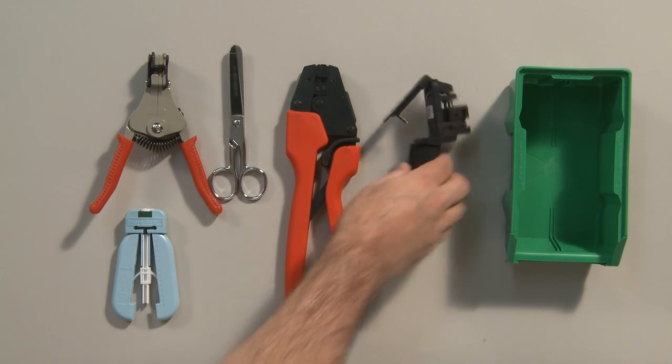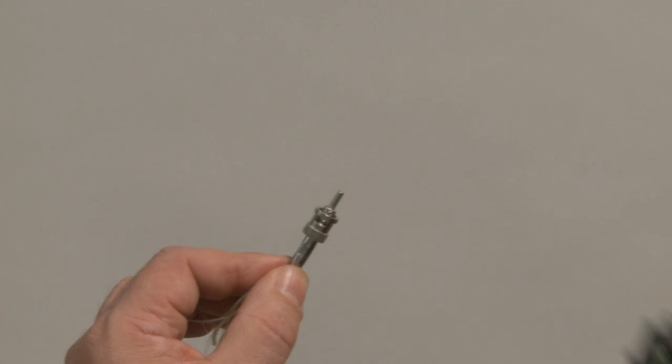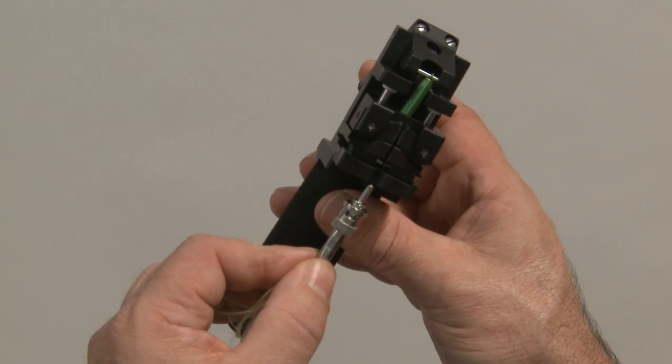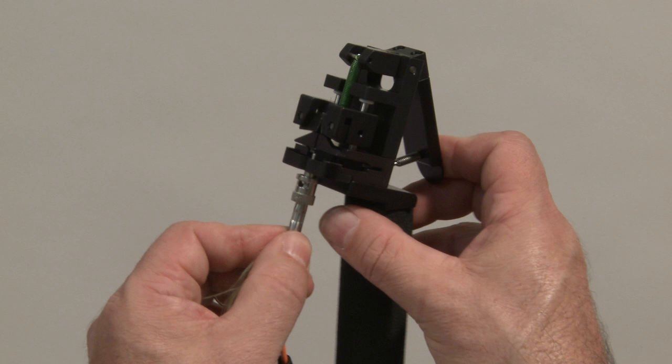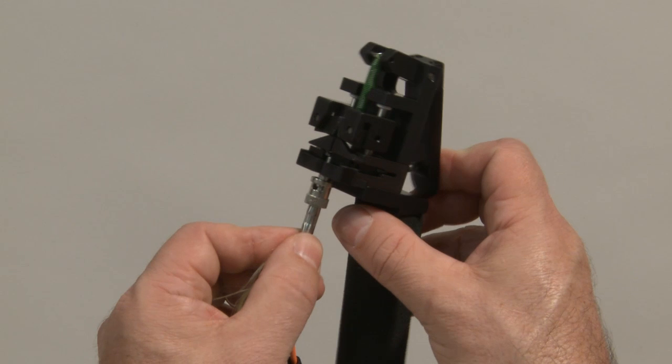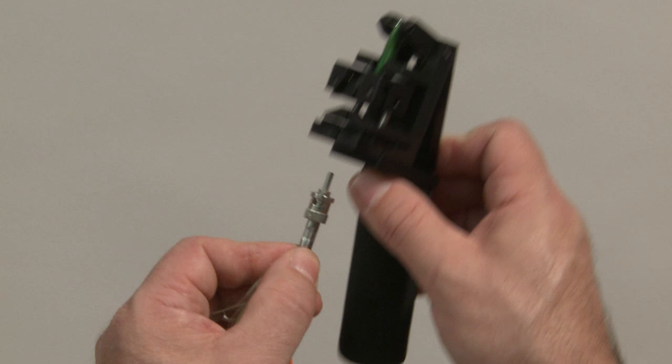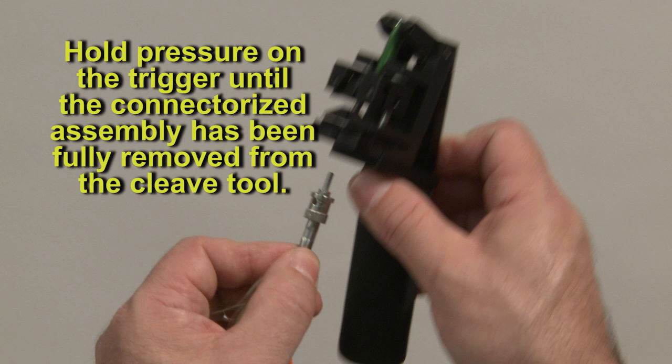Position the connector in the diamond cleave tool. Use your index finger to actuate the trigger on the cleave tool once the connector has been fully seated in the well. Slowly and gently depress the trigger to perform the cleave. Hold pressure on the trigger until the connectorized assembly has been fully removed from the cleave tool.